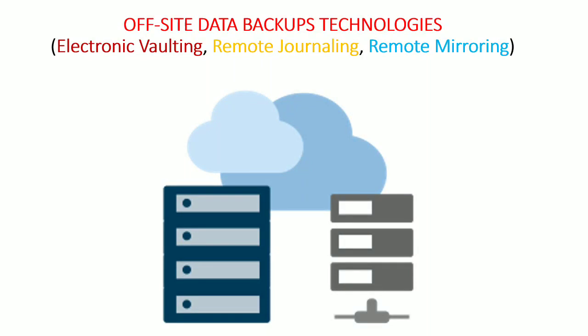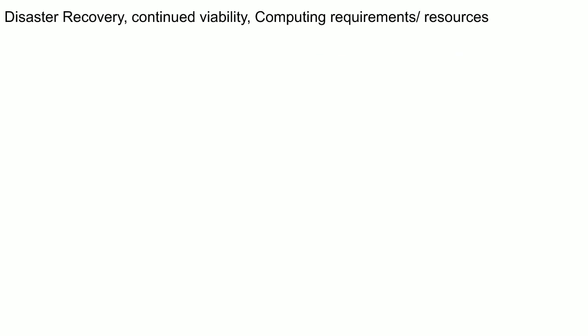In this video, I will discuss three technologies used to backup your data at an off-site location so that in case of any disaster you can recover your data from that off-site location. These three technologies are electronic vaulting, remote journaling, and remote mirroring, and they are part of your disaster recovery effort to ensure the continued viability of your organization's services.